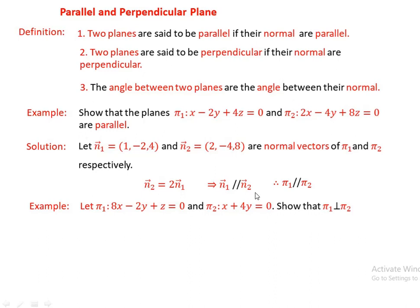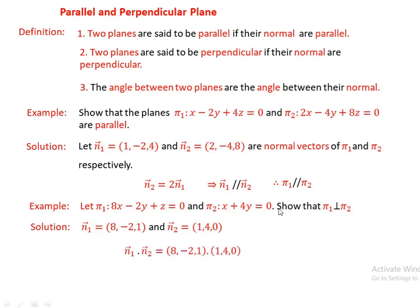Another example: let pi1 be 8x minus 2y plus z equals 0, and pi2 be x plus 4y plus 0z equals 0. Show that pi1 is perpendicular to pi2. Again we identify the normal vectors. If the normal vectors are perpendicular, the planes are also perpendicular; if they are parallel, the planes are parallel. So here n1 is the normal vector for pi1 and n2 is the normal vector for pi2.